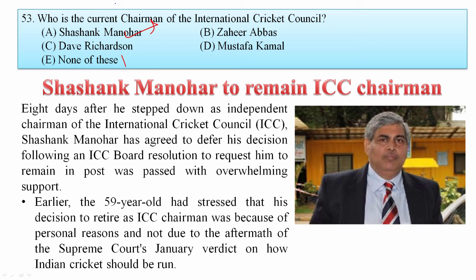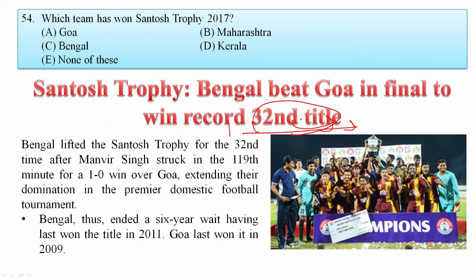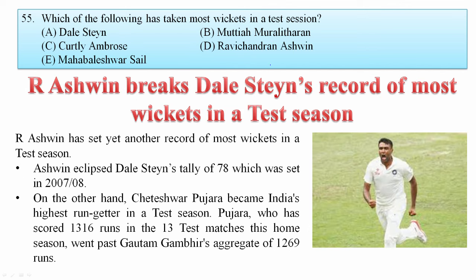Which team won the Santosh Trophy 2017? Bengal beat Goa in the final to win a record 32nd title. Your answer is Bengal. Who took the most wickets in a Test season? R. Ashwin broke Daly Strain's record for most wickets in a Test season. Cheteshwar Pujara also became India's highest Test run-getter in a Test season, scoring 1,316 runs in 13 Test matches, surpassing Gautam Gambhir's aggregate of 1,269 runs.